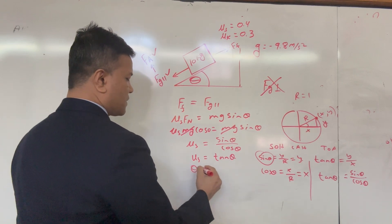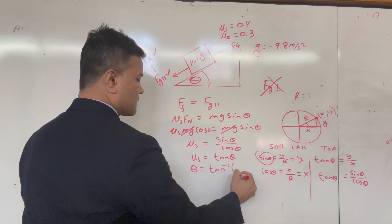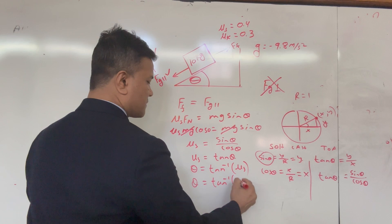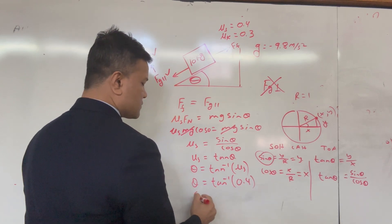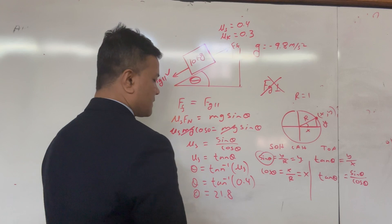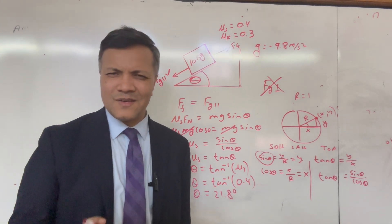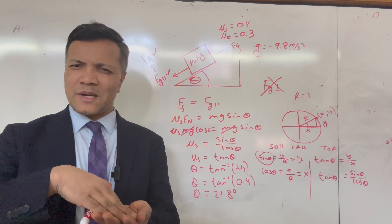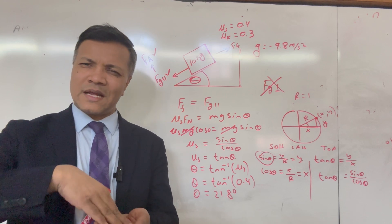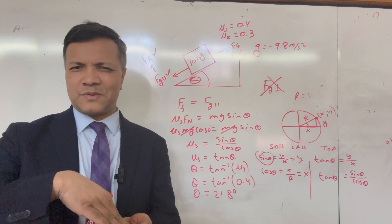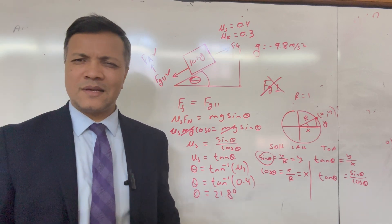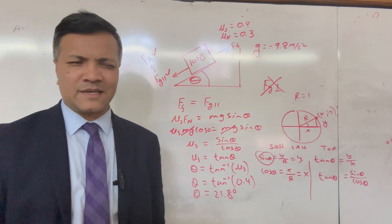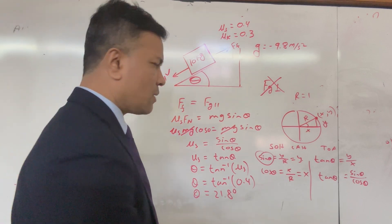So our threshold angle is tan⁻¹(μs) = tan⁻¹(0.4) = 21.8°. If the angle is 21.7°, friction will stop the sliding. If the angle is more than 21.8° — say 21.9° — friction will not be able to stop the sliding.